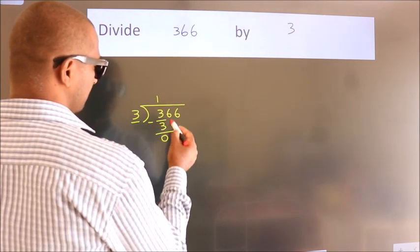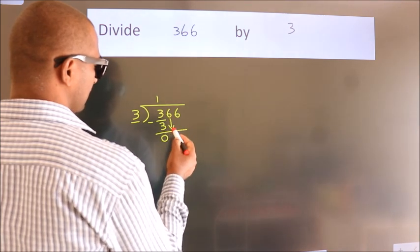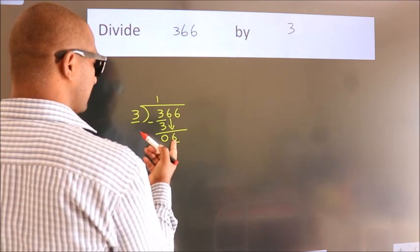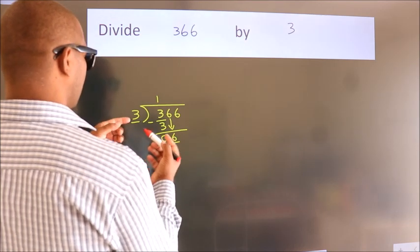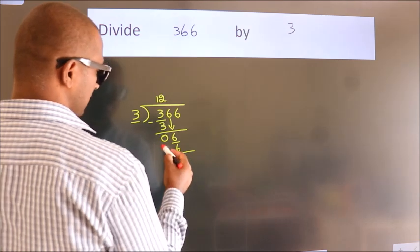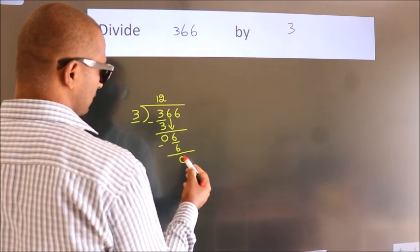After this, bring down the beside number. So, 6 down. When do we get 6? In the 3 table. 3 times 2 is 6. Now we subtract. We get 0.